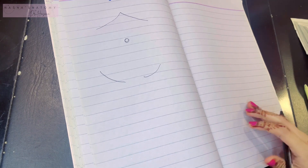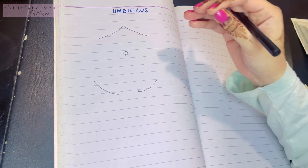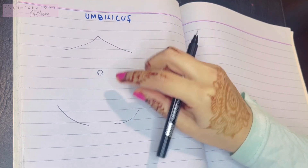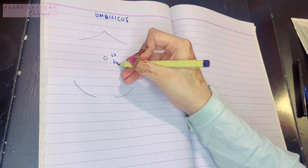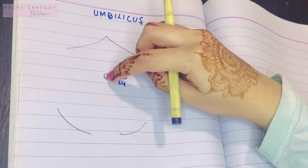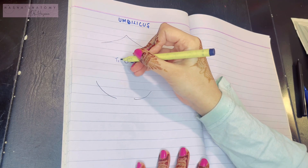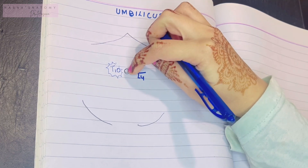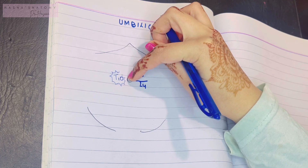Assalamu alaikum, this is Dr. Hasna from Hasna's Anatomy, and today we'll be discussing the umbilicus of the abdomen. The umbilicus is a scar formed on the anterior abdominal wall's skin. This scar lies at the level of the L3-L4 vertebra junction. Although located at L3/L4, it lies on dermatome T10, which is the dermatome of the umbilicus — the nerve supplying it, the spinal segment at the level of the umbilicus.